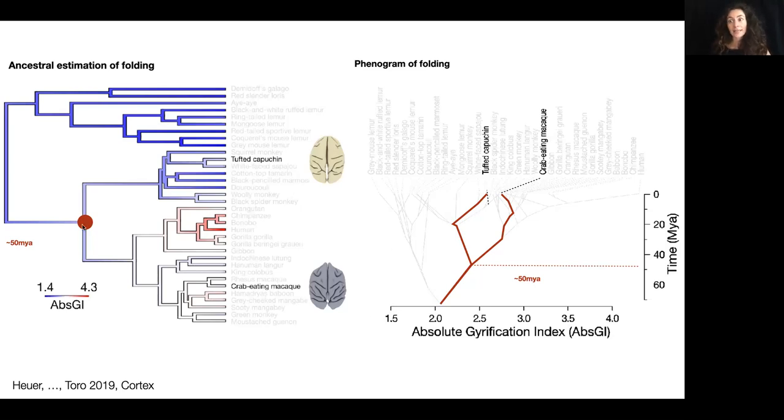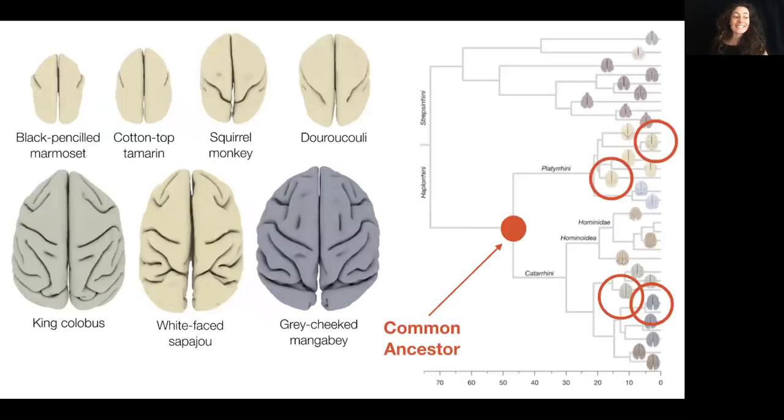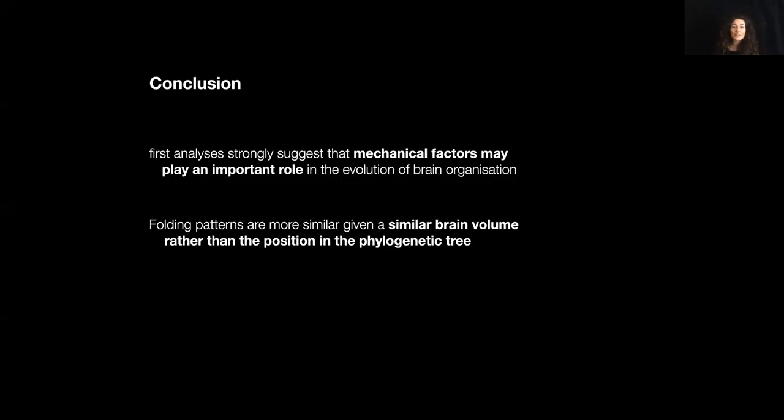The tufted capuchin is a particularly interesting example. Its ancestor may likely have had an unfolded lissencephalic small brain about 47 million years ago. But then the tufted capuchin derived a larger brain and ended up very close in terms of brain volume to the crab-eating macaque. We can see that this is not just an outlier. We see it across many different species. Many of them have a common ancestor 47 million years ago, likely lissencephalic and small brain. Yet, just based on a more similar brain volume, these species have derived a very similar folding pattern. This analysis suggests that mechanical factors may play an important role in the evolution of brain organization. Folding patterns are more similar given the brain volume similarity, rather than the position in the phylogenetic tree.